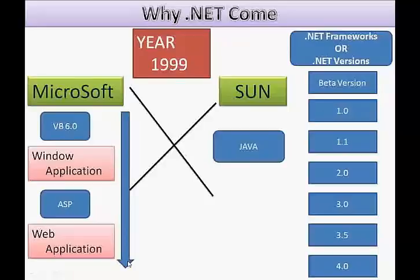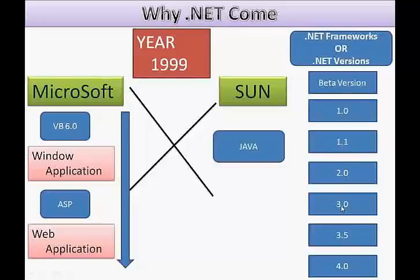That's why Microsoft released the first version of .NET in 1999 as a beta version. After that they released version 1.0, 1.1, 2.0, 3.0, 3.5, and recently they released 4.0. These are called .NET frameworks or .NET versions.